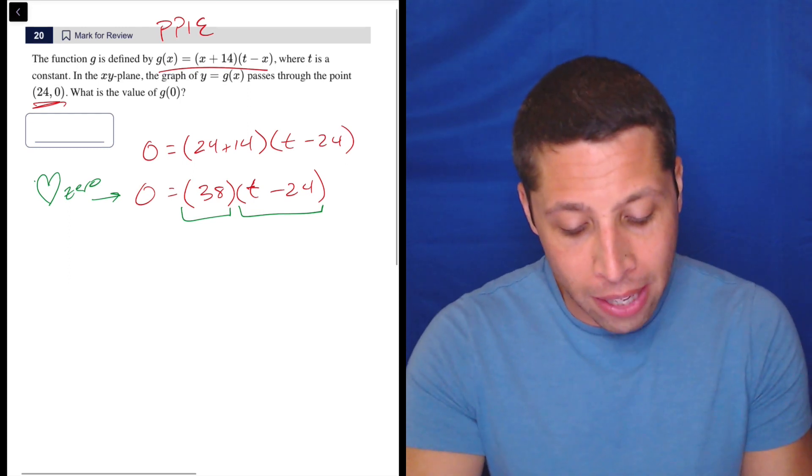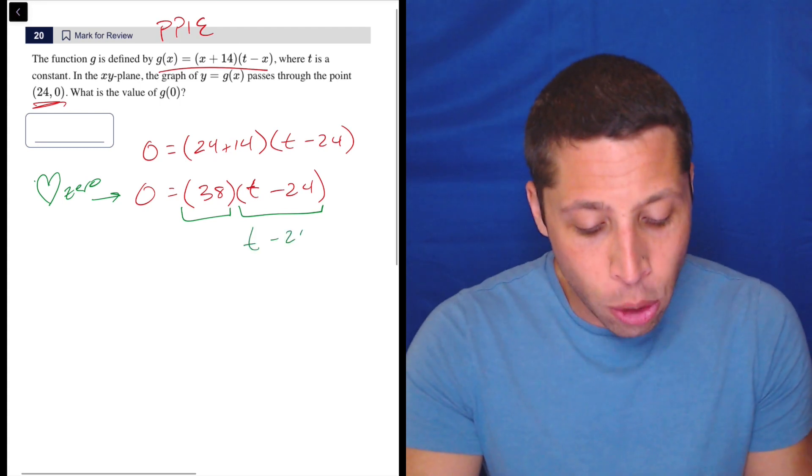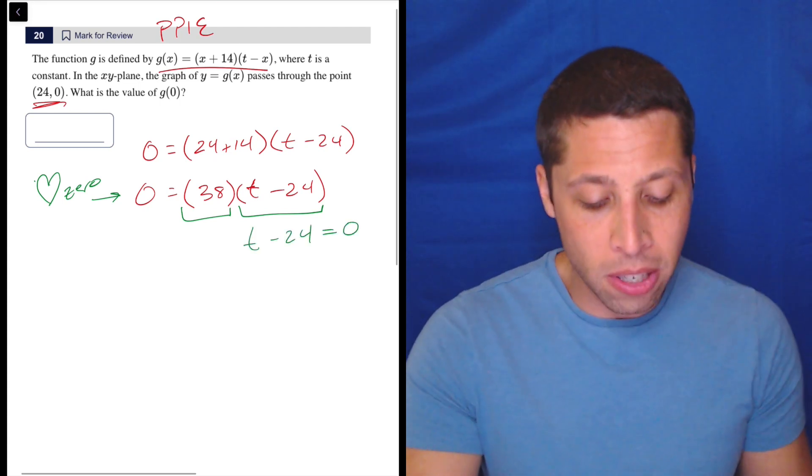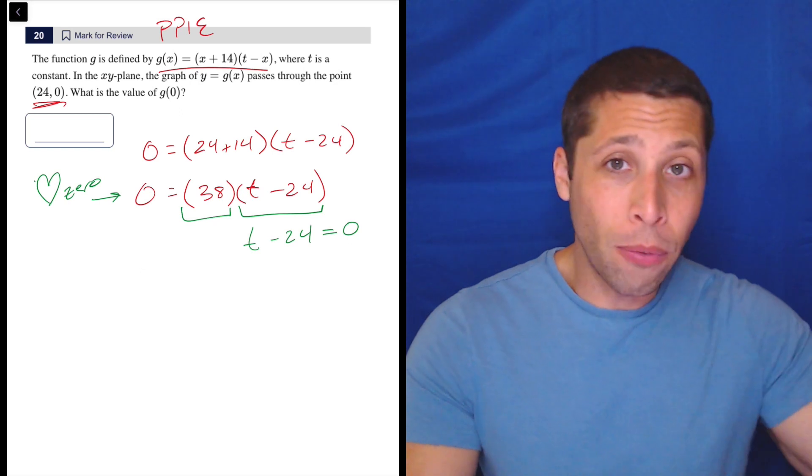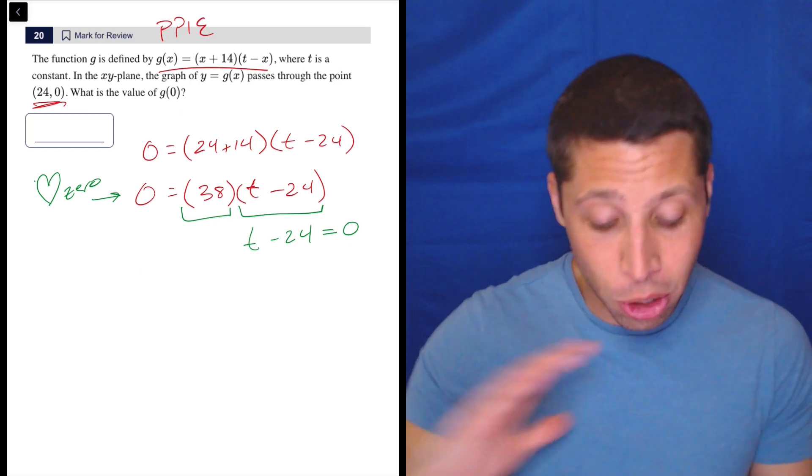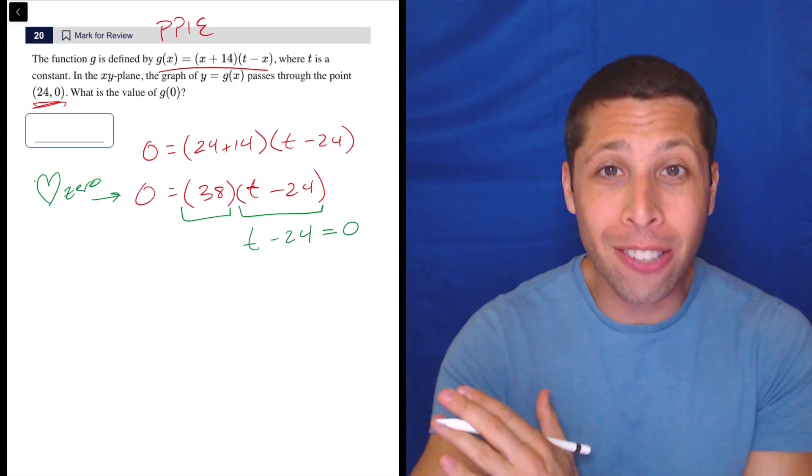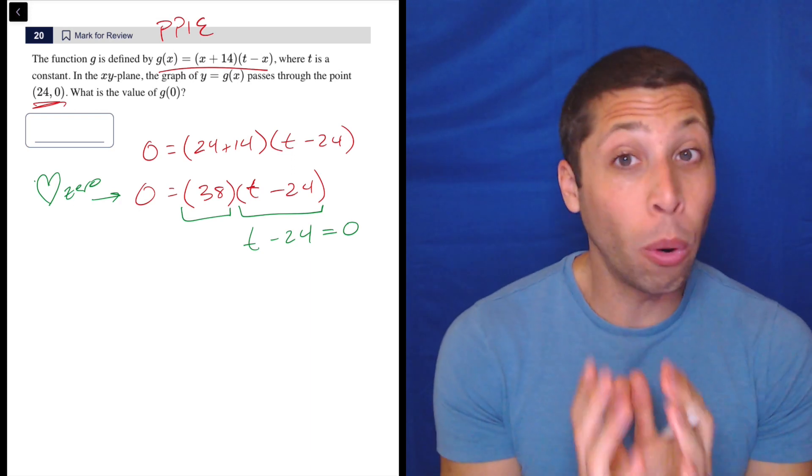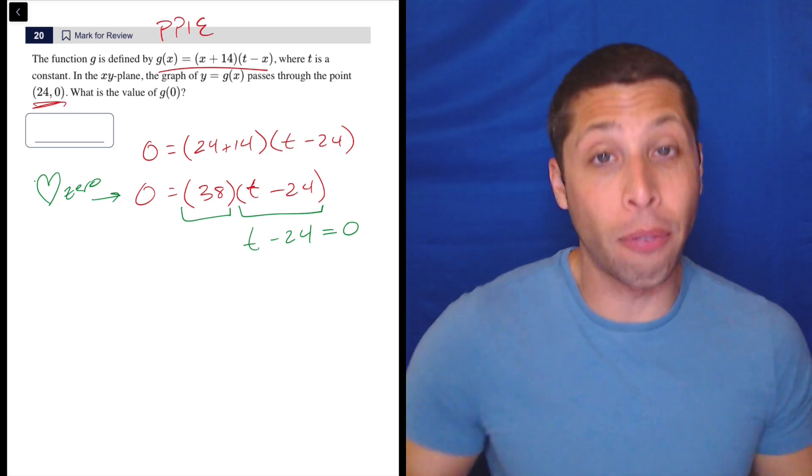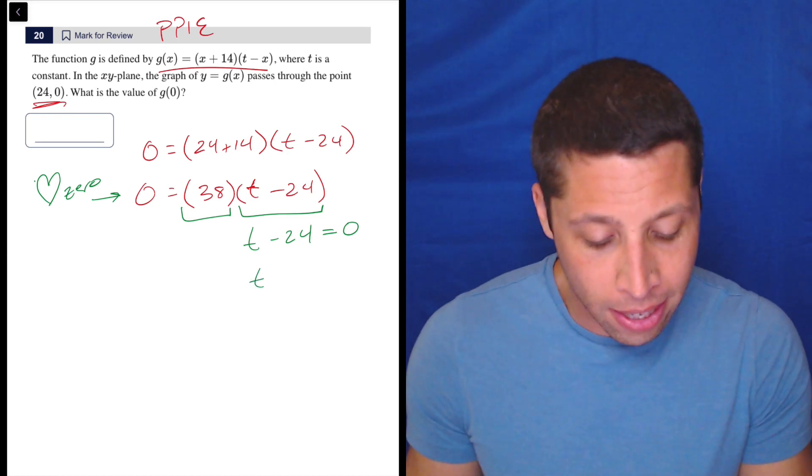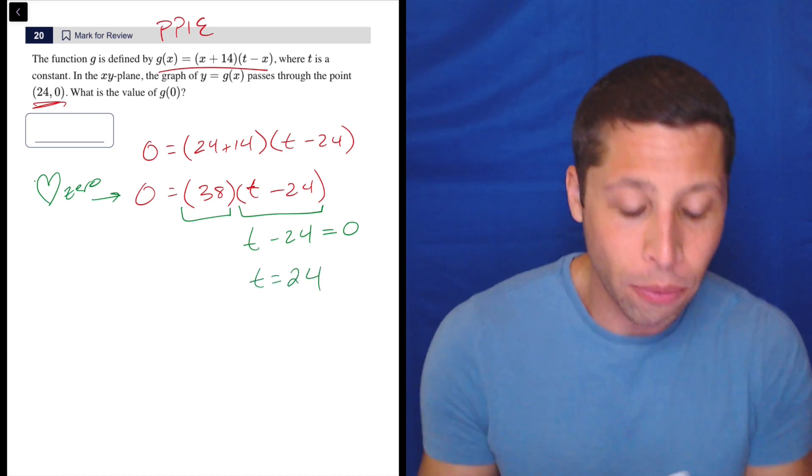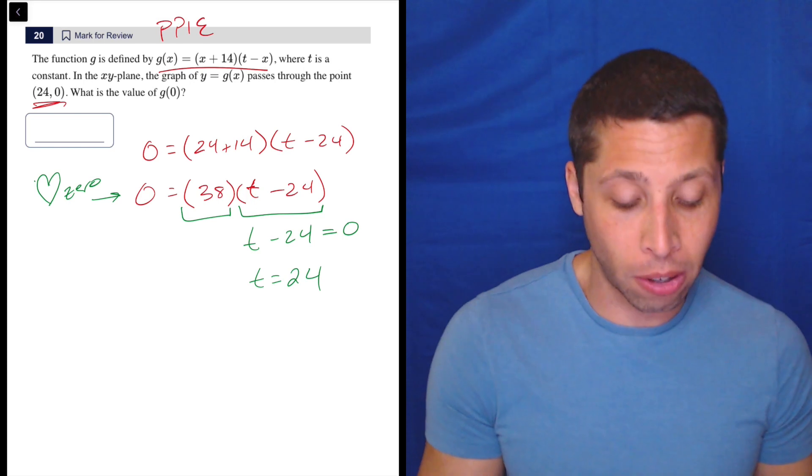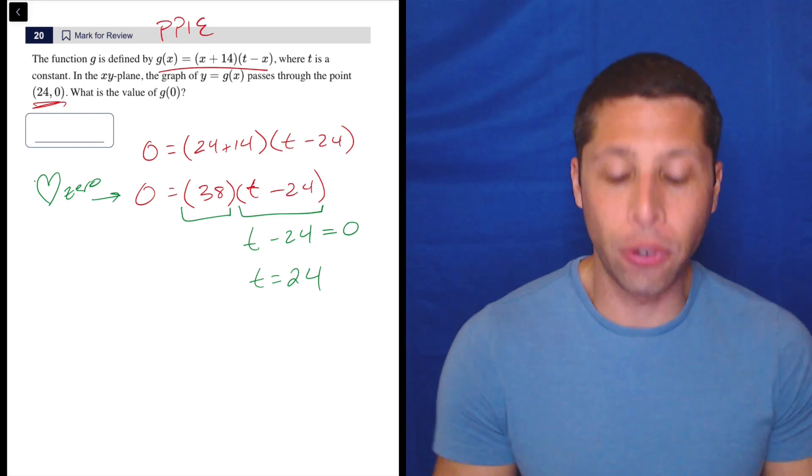But instead, we could just look at this piece here and say, okay, in order for this whole thing to be equal to zero, T minus 24 has to be zero here, because there's no way for the 38 to be zero. 38 is 38. So this lets us have a simple, more understandable equation, and we could solve for T now, or you can just recognize that it has to be 24. 24 minus 24 is what gives us zero.